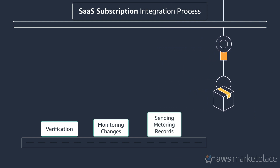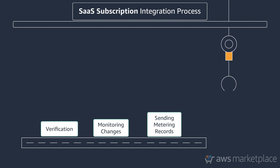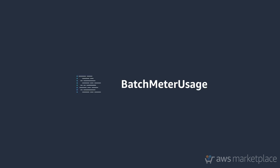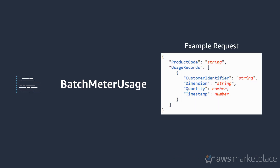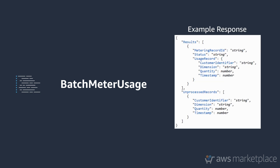Finally, we move into sending metered records. In order to bill a customer for usage, you will look at the batch meter usage operation in the Marketplace metering service. Here is what a sample request looks like. And here is what a sample response looks like if the records were processed successfully. If records are not processed by Marketplace, they will show up in the unprocessed records section, and you will need to resend them.